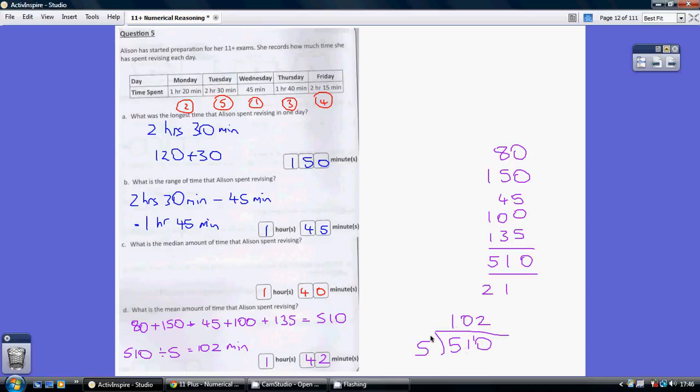Then converting that back into hours and minutes: 102 minutes is 1 hour (60 minutes) plus 42 minutes left over.